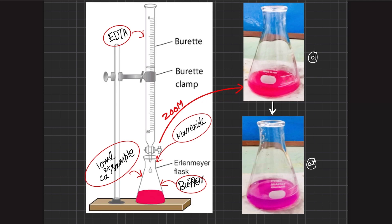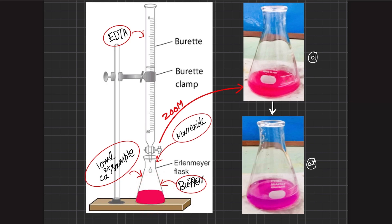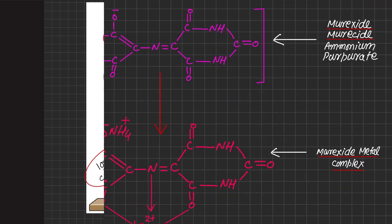As we drop EDTA from the burette into the flask, the complex between muroxide and calcium breaks and the complex between EDTA and calcium forms. After passing the midpoint, the color shifts from rose red to purple. This indicates that the muroxide-calcium complex is breaking while the EDTA-calcium complex is forming, causing the color shift.